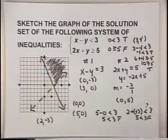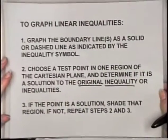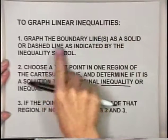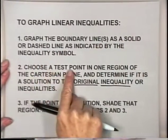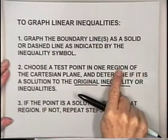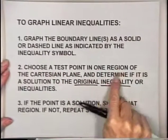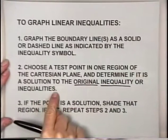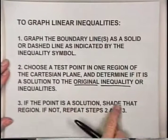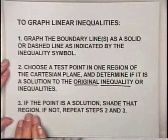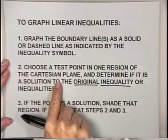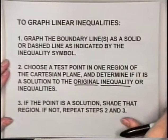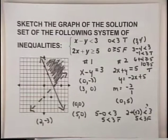Once you know you've found the solution region, there's no need to try the other areas. How many times you have to try depends on how quickly you find the solution set. Coming back to our steps: graph boundary lines as solid or dashed, choose a test point in one region, check it in all original inequalities, shade if it satisfies them all, otherwise try a different region.